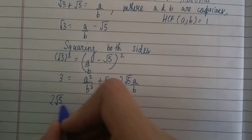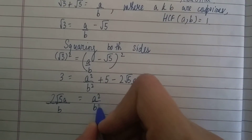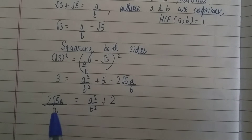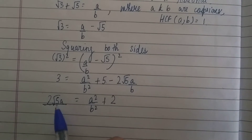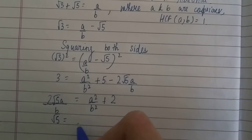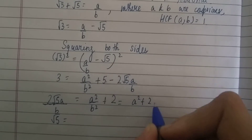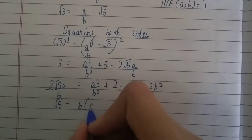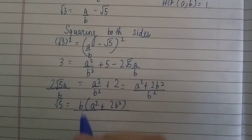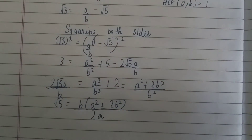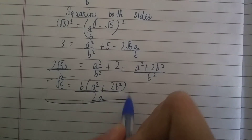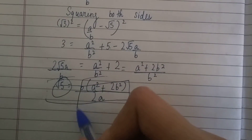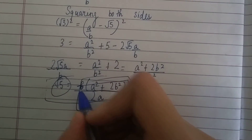Now rearranging, we get 2√5 · (a/b) = a²/b² + 5 − 3, which simplifies to a²/b² + 2. Shifting a/b and 2 to the other side and isolating √5, we get √5 = (a² + 2b²) / (2ab). This is a very important statement.